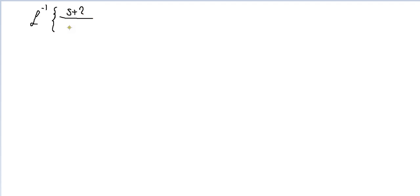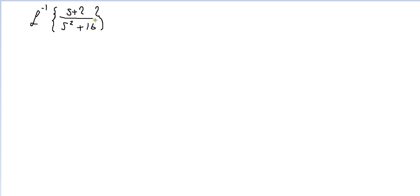Inverse Laplace transform of (s + 2) over (s squared + 16). A little bit tricky, right? We don't know a direct Laplace formula for this, so let's look at the denominator first. We have s squared plus 16, matching s squared plus ω squared. We also have s in the numerator, which means cosine — because the Laplace transform of cosine(ωt) equals s over s squared plus ω squared.